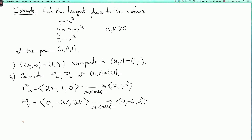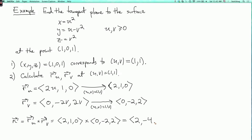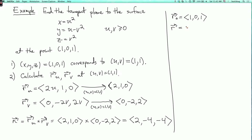Now we can calculate the normal vector by taking r_u cross r_v: (2, 1, 0) cross (0, minus 2, 2). The first component is 1 times 2 minus 0 times minus 2, which is 2. The second component is 0 times 0 minus 2 times 2, which is minus 4. The third component is 2 times minus 2 minus 1 times 0, which is also minus 4. So the normal vector is (2, minus 4, minus 4).